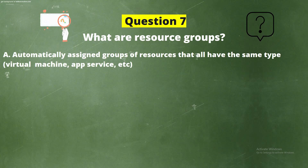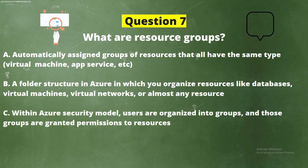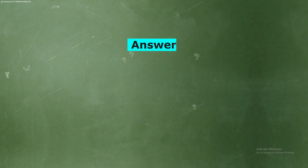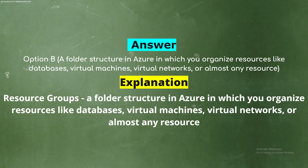Question 7: What are Resource Groups? Options: Option A - Automatically assigned groups of resources that all have the same type. Option B - A folder structure in Azure in which you organize resources like databases, virtual machines, virtual networks, or almost any resource. Option C - Within Azure's security model, users are organized into groups which are granted permissions to resources. Option D - Based on the tag assigned to a resource, it is assigned to a group. The correct answer is Option B. Explanation: Resource groups are a folder structure in Azure in which you organize resources like databases, virtual machines, virtual networks, or almost any resource.